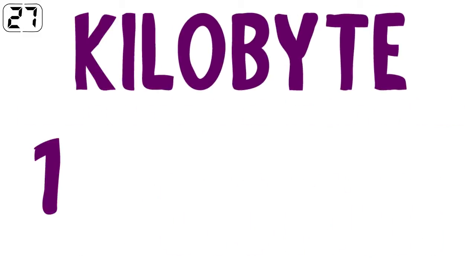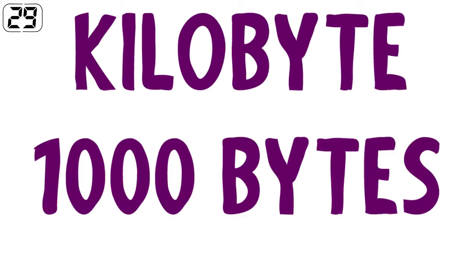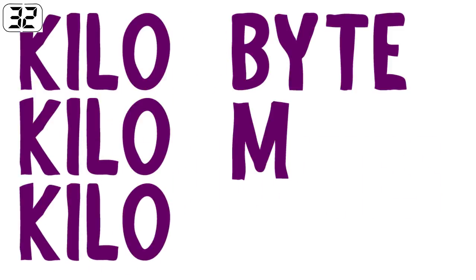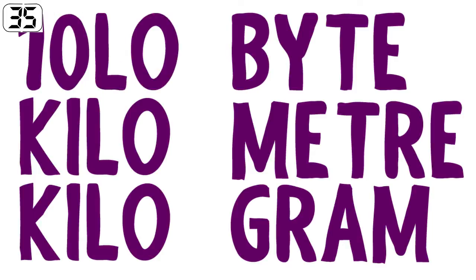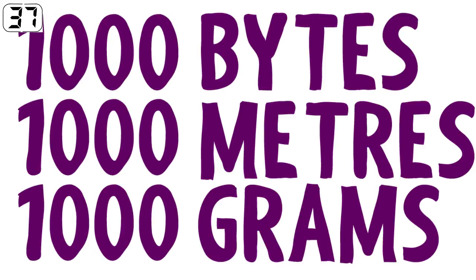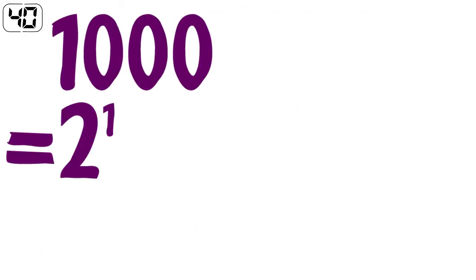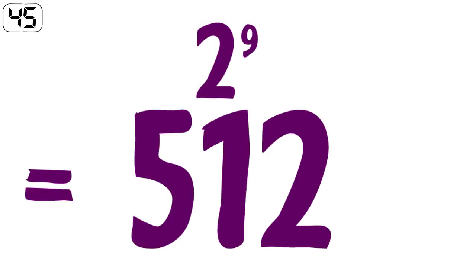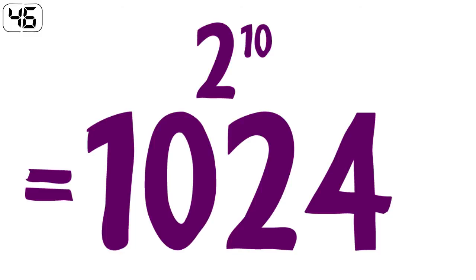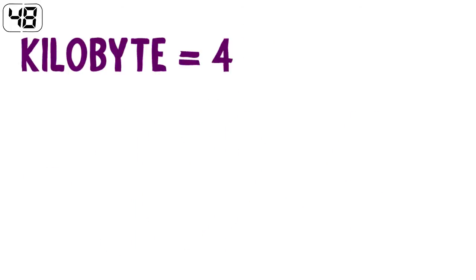A kilobyte is often referred to as 1000 bytes. In fact, kilo is a base 10 prefix that we use in binary to represent approximately 1000. The binary equivalent of 1000 is 2 to the power of 10, which equals 1024. So a kilobyte is actually 1024 bytes.